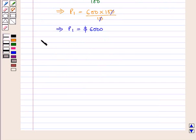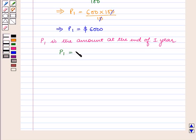Also, as P1 is the amount at the end of the 1st year, P1 is equal to P plus interest. That is, 6000 is equal to P plus P into 10 into 1 upon 100.